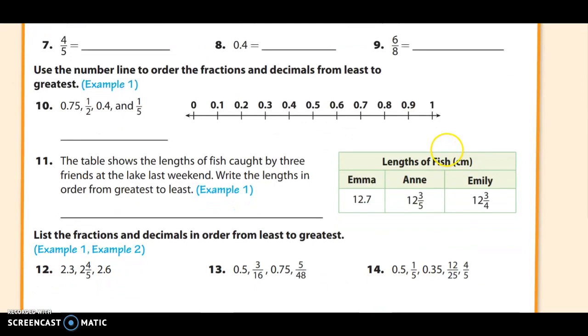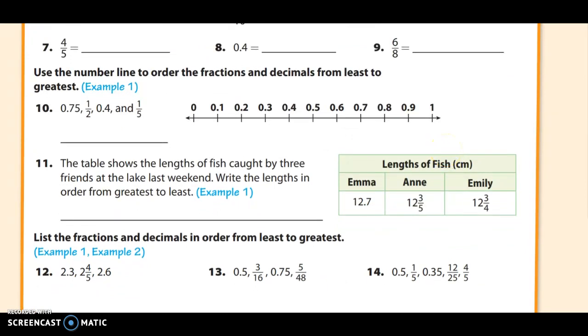We are on numbers 10 and 11. Number 10 reads, use the number line to order the fractions of decimals from least to greatest. So I've got 4 terms here. And 0 and 75 hundredths would be right in between 0 and 70 and 0 and 80. So that first one goes here. And that one's going to be 0 and 75.